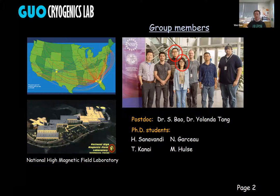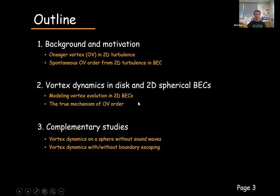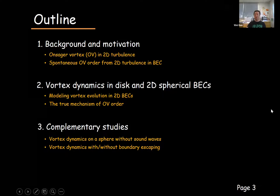Here's the outline of my talk. In the first part, I will introduce the background and discuss the concept of Onsager vortices, and then explain our motivation. In the second part, I will present our numerical study of the vortex dynamics in both the disk and the two-dimensional spherical BEC shell. Through this discussion, I want to show you the true mechanism of Onsager vortices in two-dimensional superfluid turbulence. Then in the third part, I will back up our understanding using additional case studies.